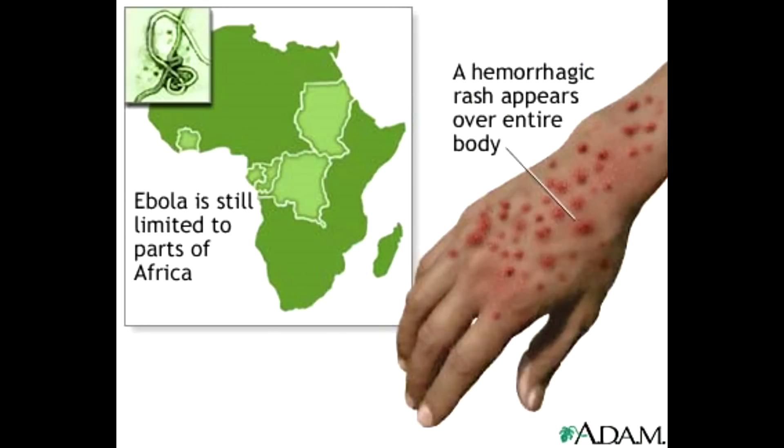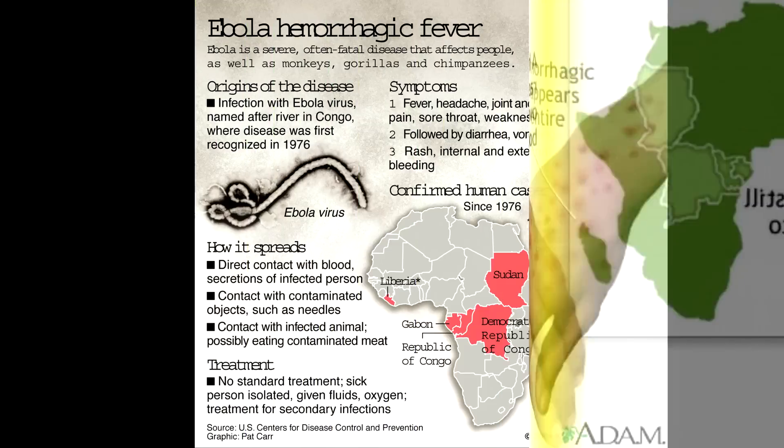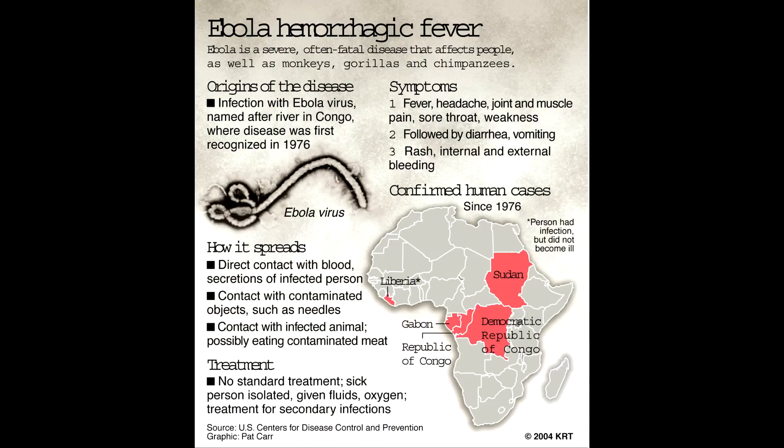The virus is known to live in fruit bats, and normally affects people living in or near tropical rainforests. It is introduced into the human population through close contact with the sweat, blood, secretions, organs, or other bodily fluids of infected animals such as chimpanzees, gorillas, fruit bats, monkeys, forest antelope, and porcupines found ill or dead in the rainforest.